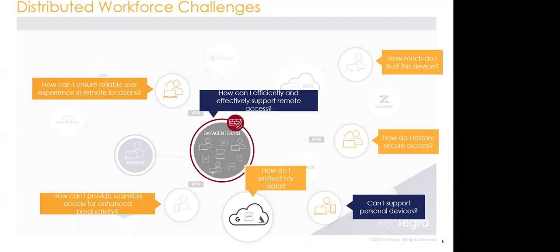On the user side, the concern is: how do I access these applications? On the IT side, the concerns include: how do we ensure seamless, always-on access to applications? How do we protect our data? How do we support personal devices that users bring in? How do we trust those devices? A user in their home or satellite office may use personal devices to access Salesforce or Office 365 — how do we trust those devices and ensure secure access to all kinds of applications?